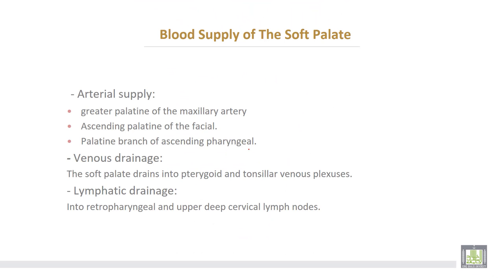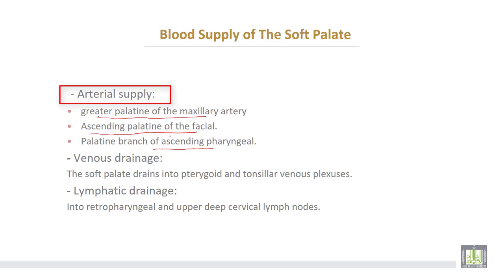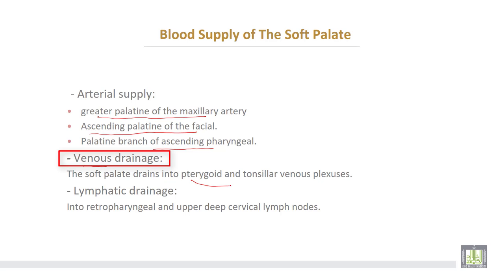The blood supply of the soft palate: arterial supply comes from the greater palatine branch of the maxillary artery, then the ascending palatine branch of the facial artery, and the palatine branch of the ascending pharyngeal artery which comes from the external carotid artery. Venous drainage: the soft palate drains into the pterygoid and tonsillar venous plexuses.